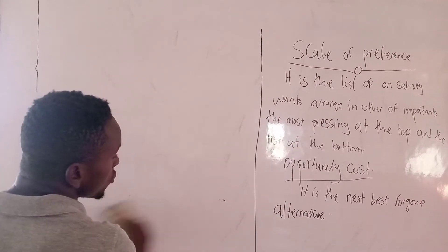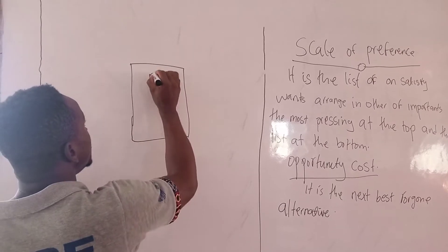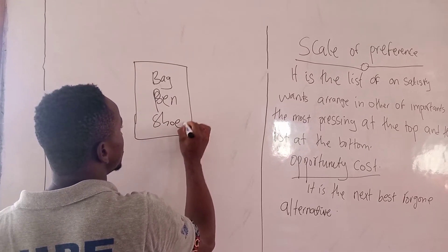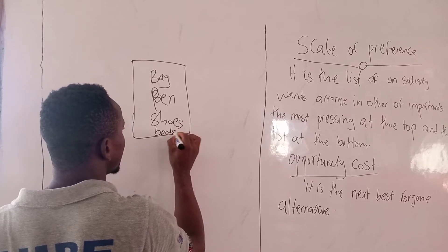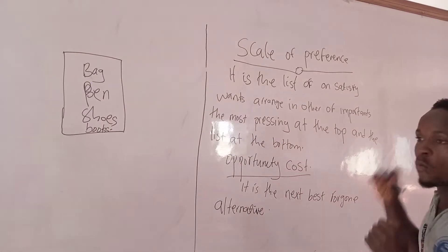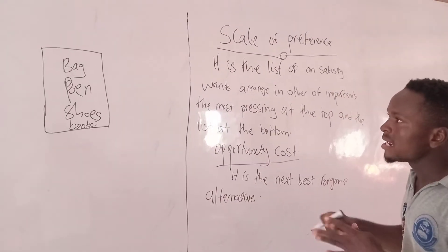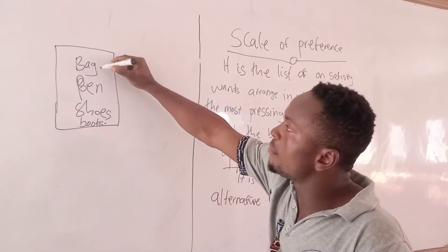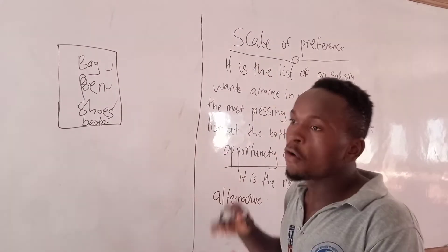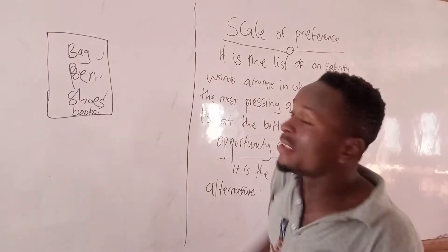Let me demonstrate the scale of preference. For a student, your scale of preference might include: bags, pen, shoes, and books. The scale of preference lists unsatisfied wants arranged in order of importance — the most important at the top and the least at the bottom. For a student, the first thing you will need is a book, then a pen, and then a shoe. We are taking the most pressing need at the top and the least at the bottom.